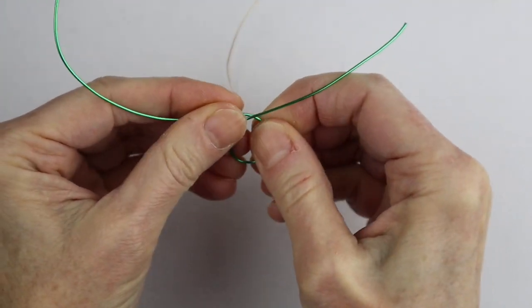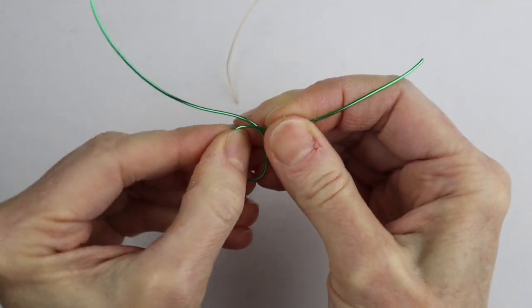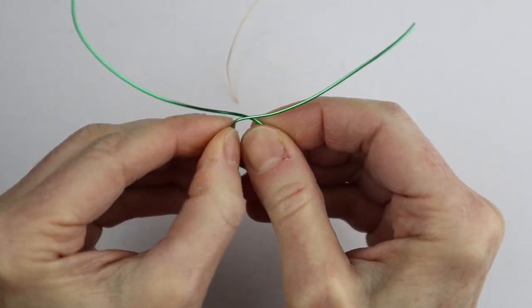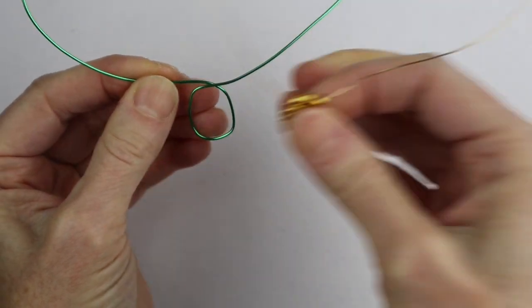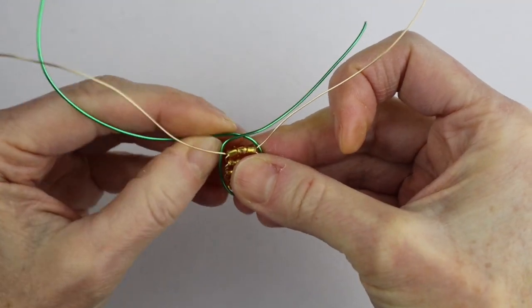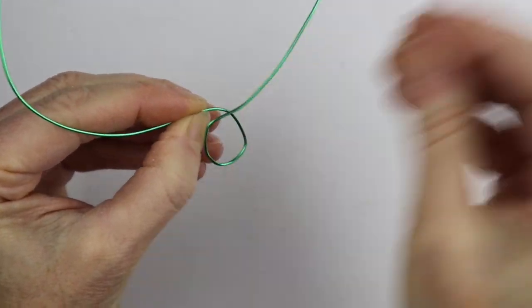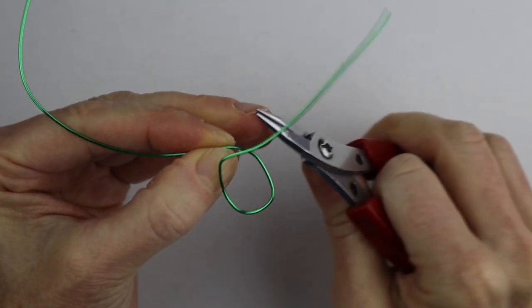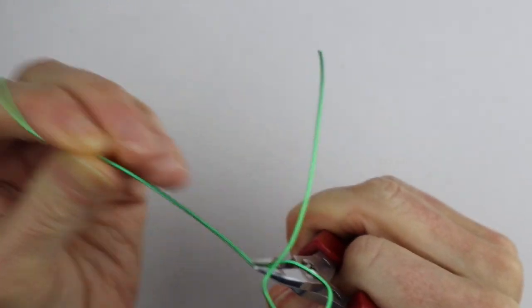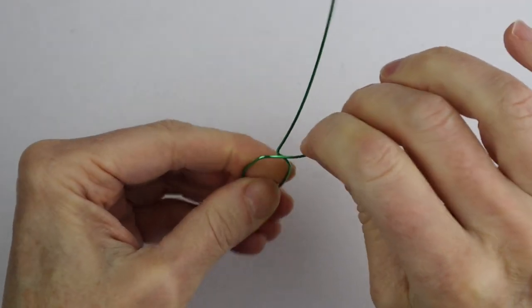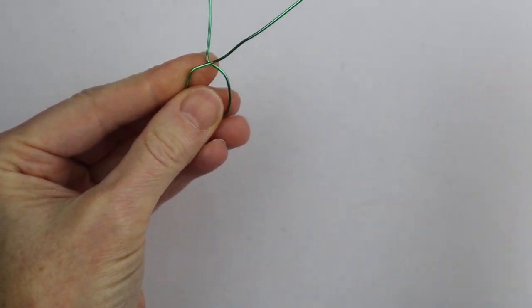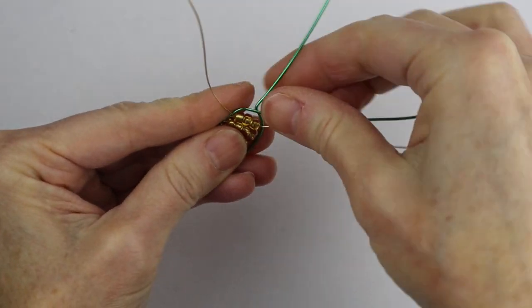What you want to do is have one end go straight up, so we're just going to form it around, make sure it's about the right size. Then take your pliers and bend one end up like that. Let's double check that it's going to fit in there.